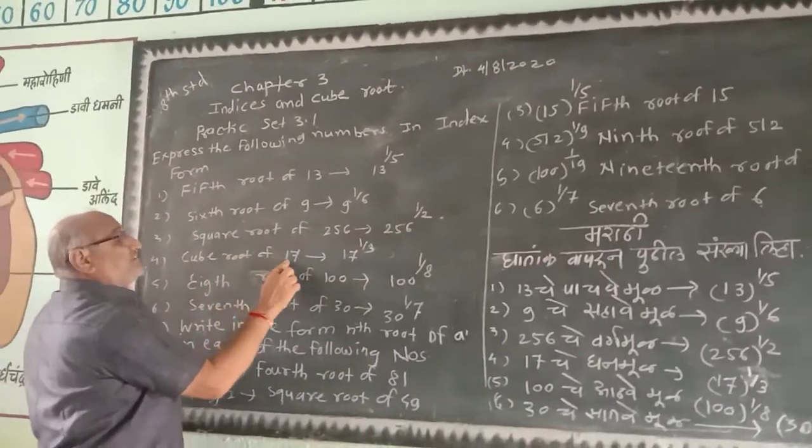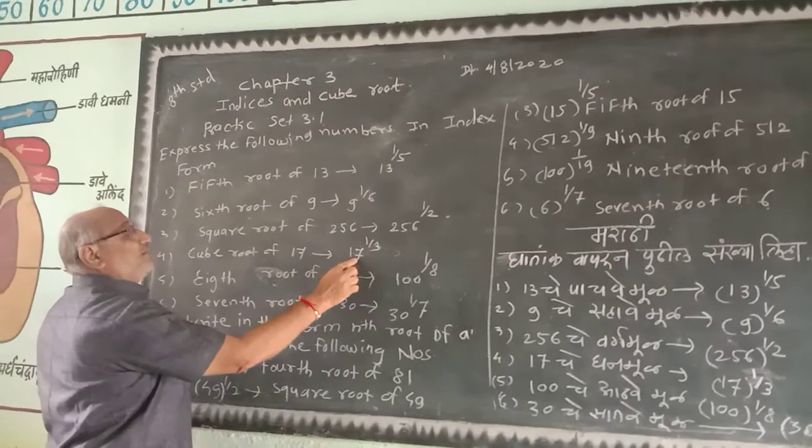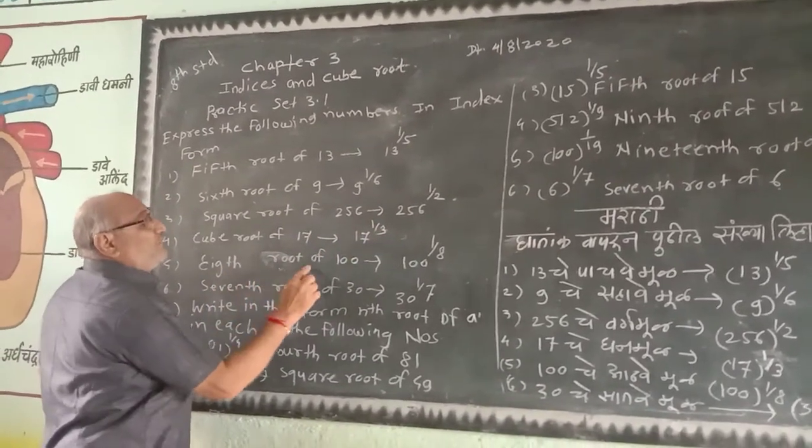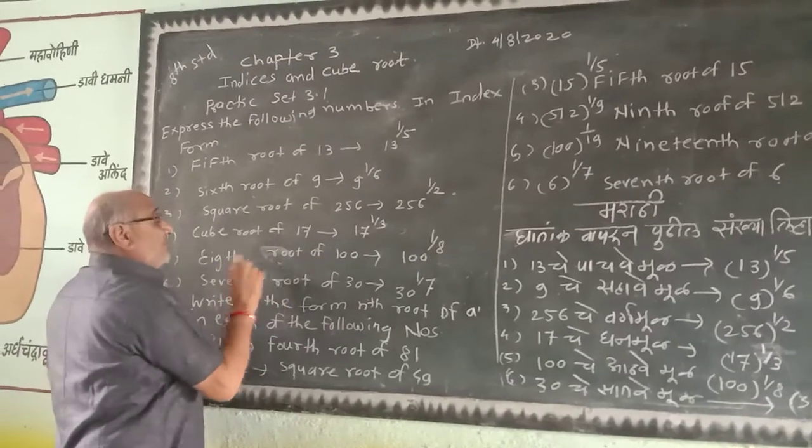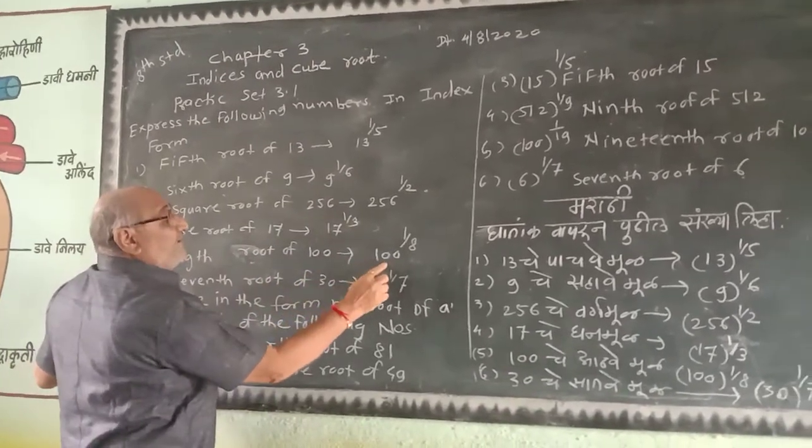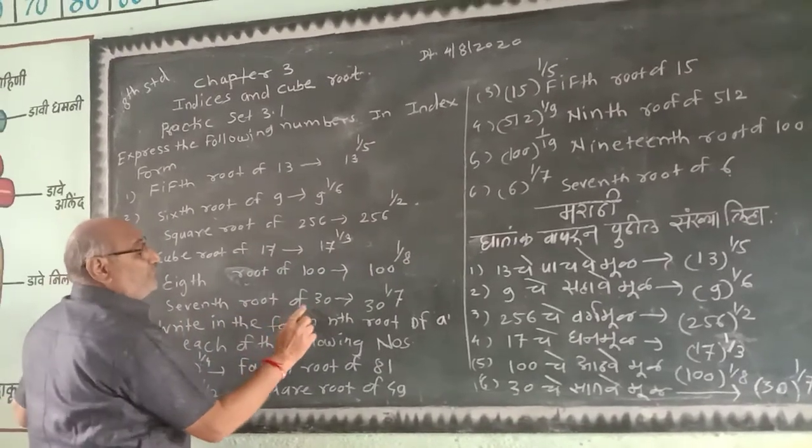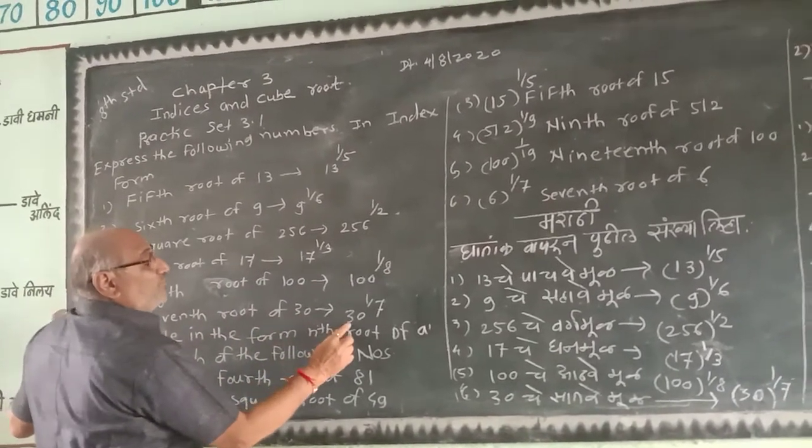Second roots of 1.7. Eighth roots of 100, 100 raised to 1/8. Seventh roots of 3.0.